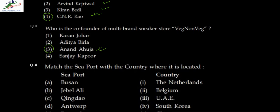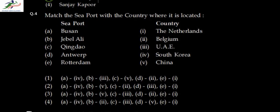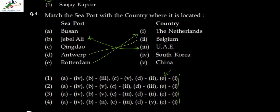Question four involves matching seaports with their countries. You might not know all of them, but you can take informed guesses based on the names. For example, Jebel Ali is a typical Middle Eastern name and can only be associated with UAE. We also observe that E is given as one throughout, which is a given. Rotterdam is in Netherlands and Antwerp is in Belgium — that's a no-brainer. Jebel Ali, which is B, matches with three, which is UAE.